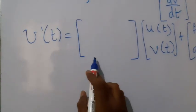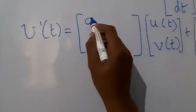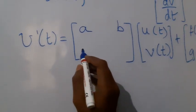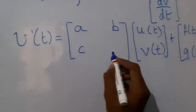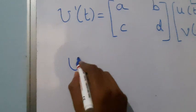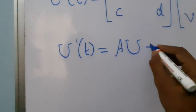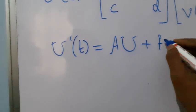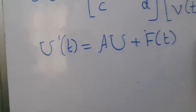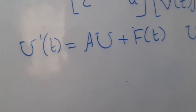Here, matrix A contains the coefficients of u and v in each of the equations. The coefficient of u is a, the coefficient of v in the first equation is b. Similarly, the coefficient of u in the second equation is c, and the coefficient of v in the second equation is d. So we have U'(t) = AU + F(t) with U(t₀) = [u₀, v₀]ᵀ.